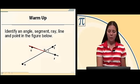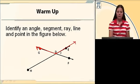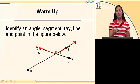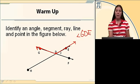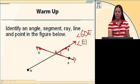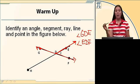I'm going to start with angles. The first angle I've just traced over is angle GDE, or you could call it angle EDG, as long as D is in the middle because D is the vertex. Use the angle symbol when you name it: angle GDE. Another angle I see in this figure is the angle opening to the right, and that angle is angle EDF or FDE. Make sure D is in the middle because D is the vertex.